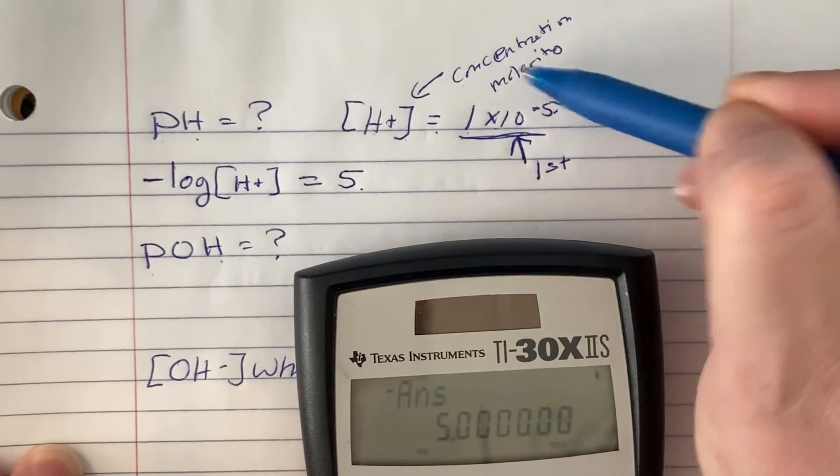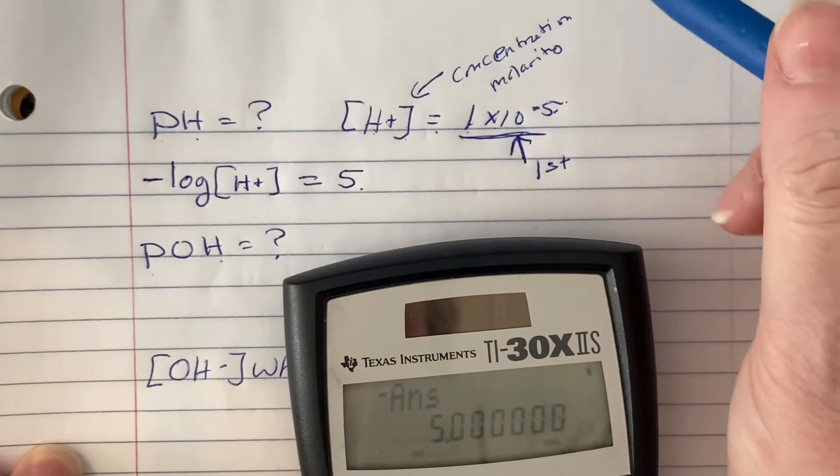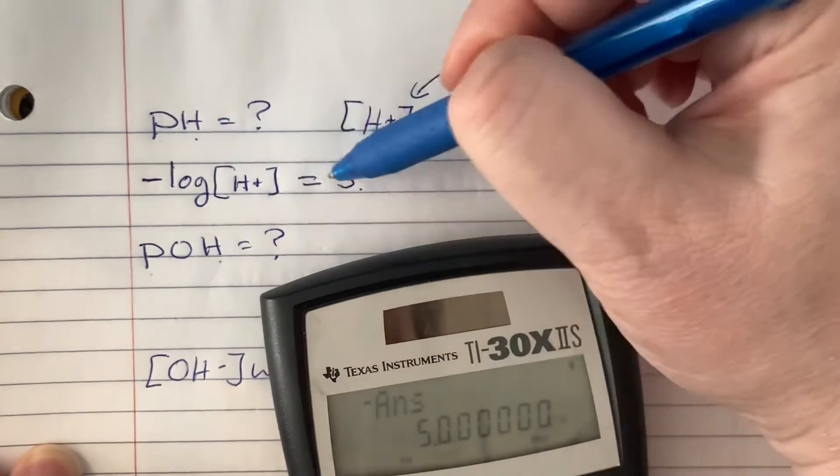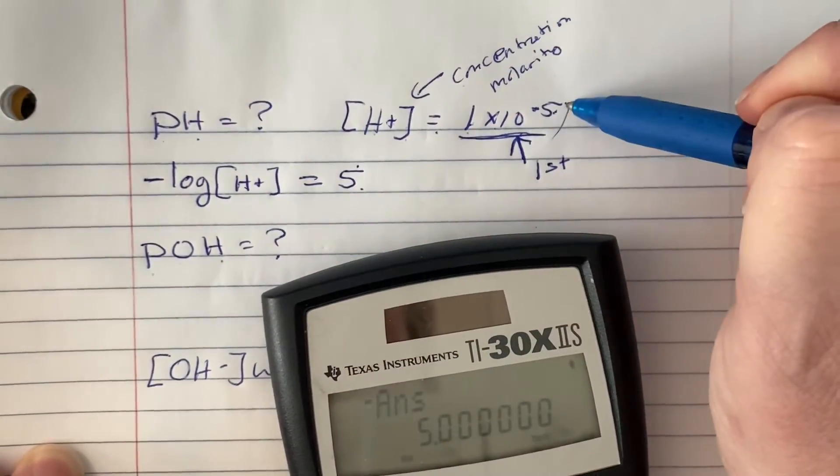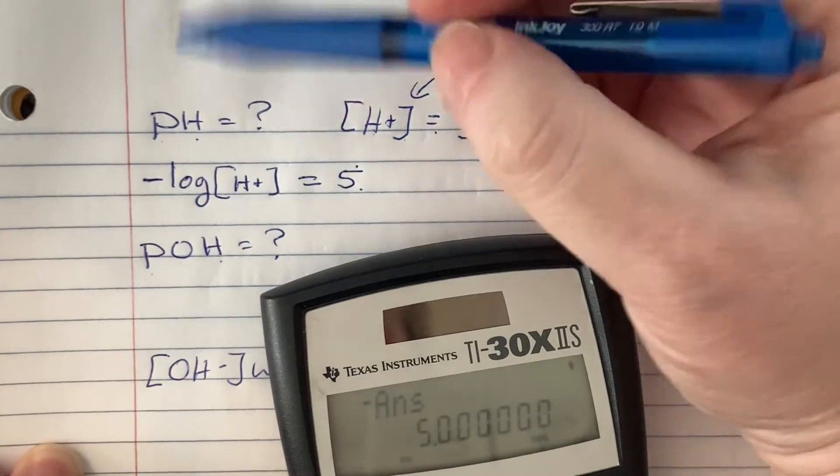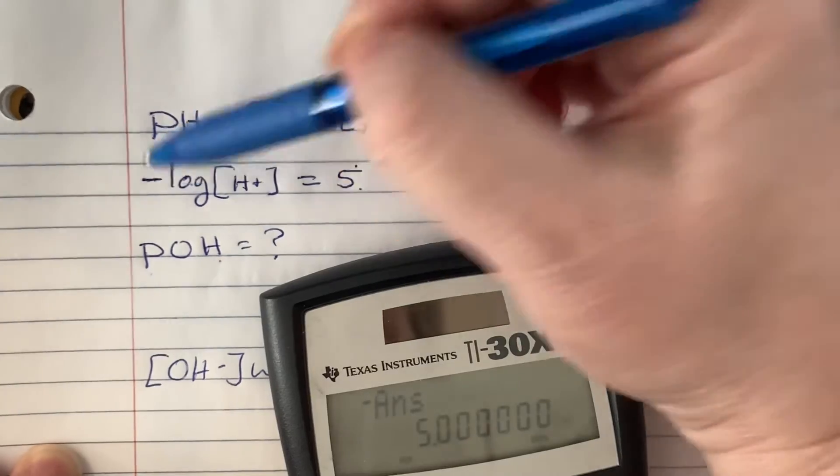Now, in this example, you can actually see it because we have a 1 here. You're not always going to have a 1 here. Okay, so always go through this process so you get it stuck in your brain. Put in the answer first, then take the log of the answer, and then flip the sign.